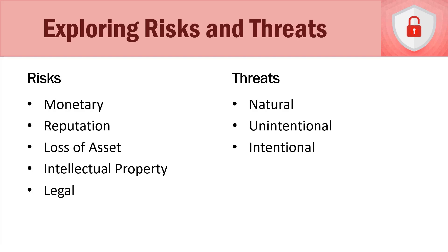Now let's talk about threats. There are three different categories: natural threats, unintentional threats, and intentional threats. Intentional threats are what most people think about — for example, a hacker writing malware such as a worm or a virus that infects systems on our network, or a hacker trying to breach our servers to steal PII (personally identifiable information) or intellectual information.